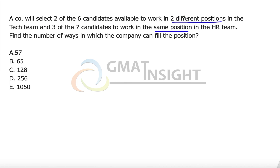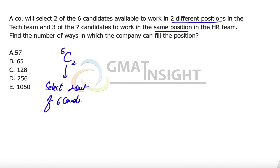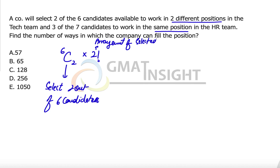For the first part: for these two different positions, out of six candidates we have to select two candidates — that's C(6,2). Because we have two different positions, the arrangement of these two selected candidates on those two positions is defined by 2 factorial. This represents the arrangement of selected candidates on two different positions.